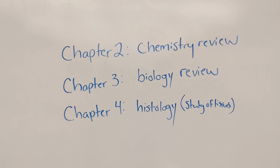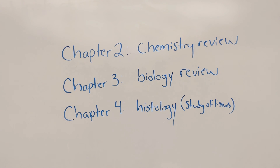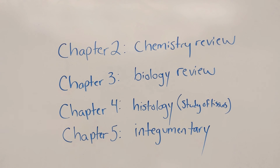Chapter two is going to be a chemistry review. Chapter three is going to be a biology review. In chapter four, you're going to learn about histology — the study of tissues. Your first lab will cover regional and directional terms and other important vocab from chapter one. Your second lab will be histology. So the first chapter where you actually talk about an organ system is chapter five.